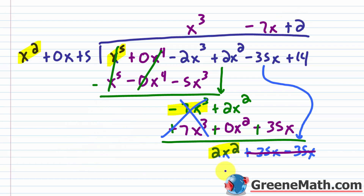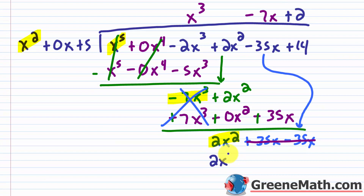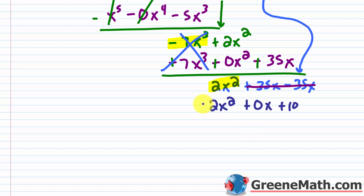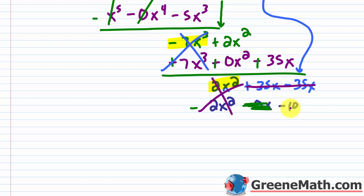Now I multiply: 2 times x squared is 2x squared. 2 times 0x is plus 0x. And 2 times 5 is plus 10. Changing all the signs gives minus 2x squared, minus 0x, and minus 10. The 2x squared terms cancel, and I'm left with negative 10.